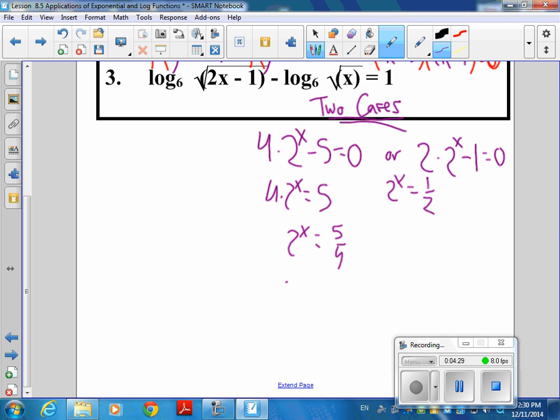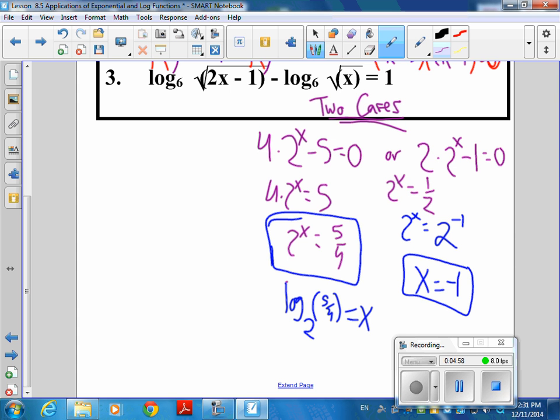Well, some people would really have a hard time solving for x here, but not you, because what are you going to do? Log base what? 2 of 5 fourths is equal to x. This one is easy, because you could restate this as 2 to the negative 1 power. What's x? Negative 1. So your two answers for this are log base 2 of 5 fourths. You could get me a decimal if you wanted with that. And then this one is x is equal to negative 1.